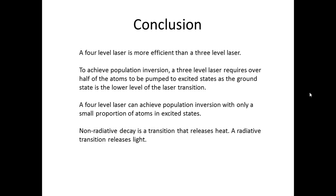So in conclusion, what have we learnt? We've learnt that a 4 level laser is more efficient than a 3 level laser. And to achieve population inversion, a 3 level laser requires over half the atoms to be pumped to excited states, as the ground state is the lower level of the laser transition. And a 4 level laser can achieve population inversion with only a small proportion of atoms in the excited states.